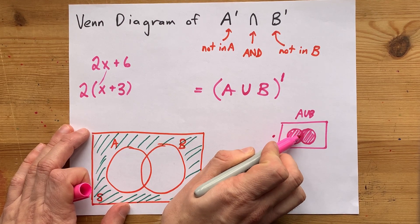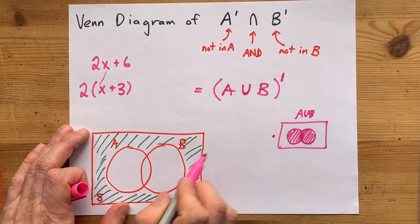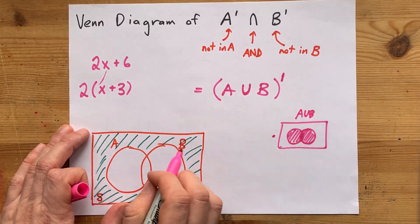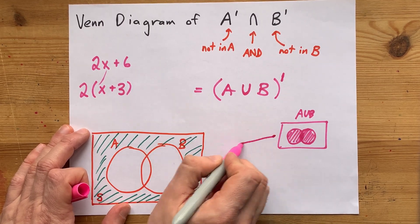The effect of complement here is that you basically reverse the shading on every single section. These three sections, which were shaded here, are now not shaded. And the one that was not shaded here is now shaded. That's the effect of complement.